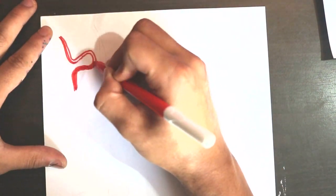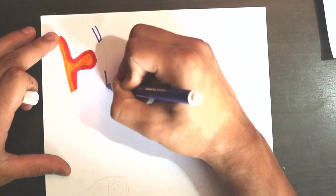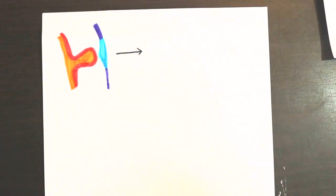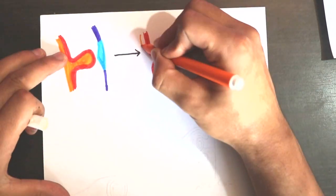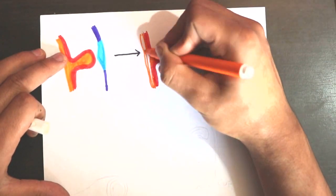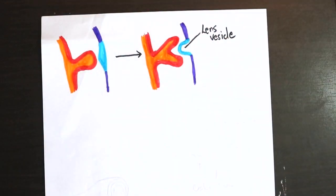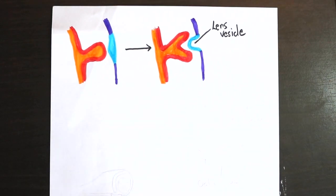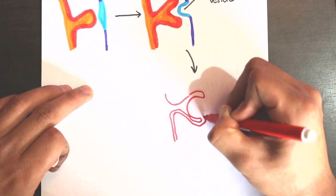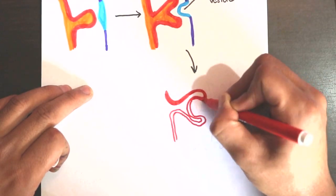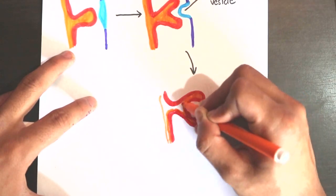The lens placode thickens further and sinks below to form the lens vesicle. The lens vesicle finally detaches from the surface ectoderm at the 33rd day of gestation and invaginates into the optic vesicle.